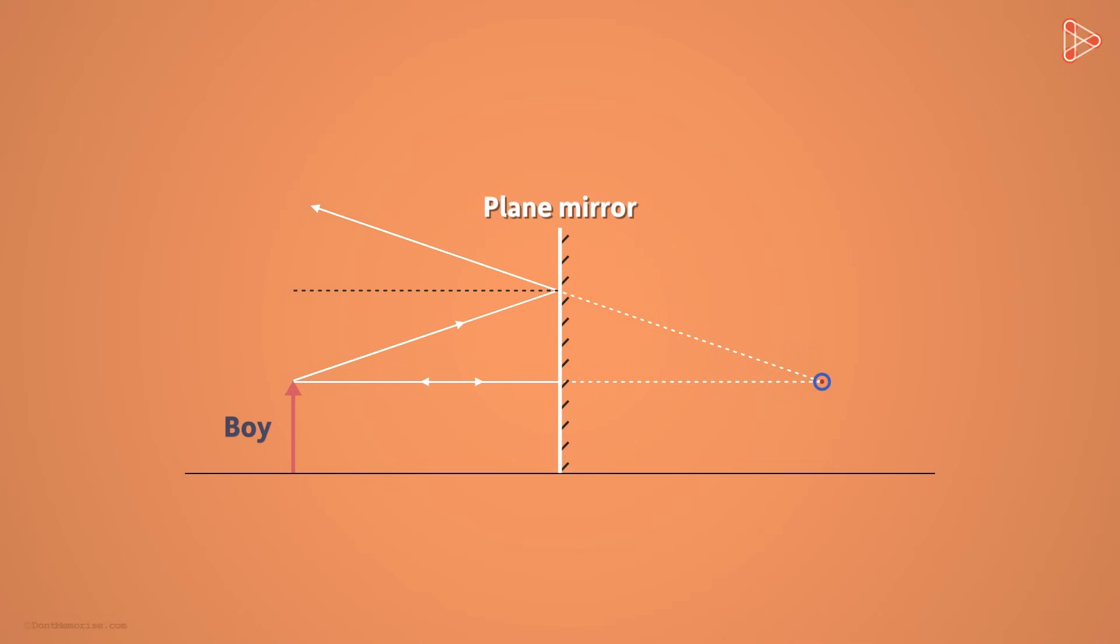When we look at this point, it appears to us that all the light rays are diverging from this point. But in reality, there are no light rays behind the mirror.